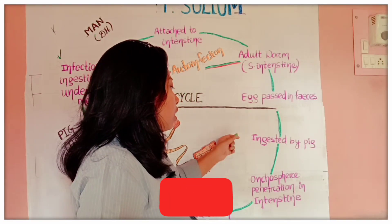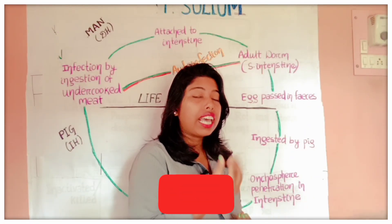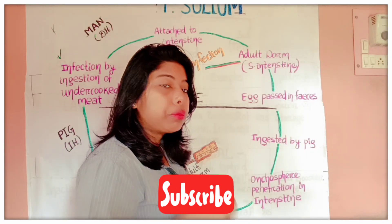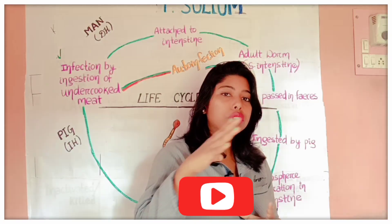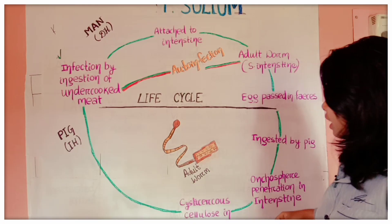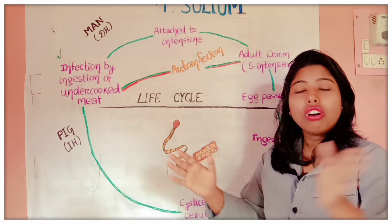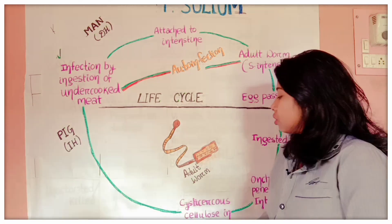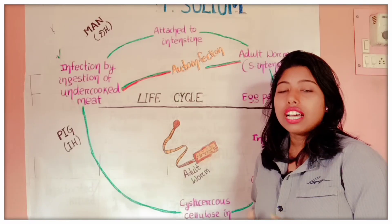Inside the pig, the egg hatches out to form the oncosphere. This oncosphere is released inside the intestine of the pig, penetrates the intestinal wall, and then through lymphatic vessels and lymphatic circulation it moves to all organs and parts of the body, including the striated muscles.